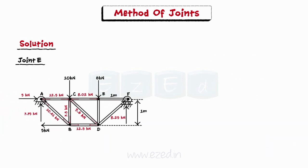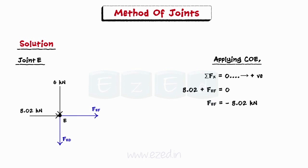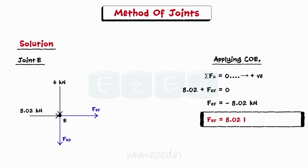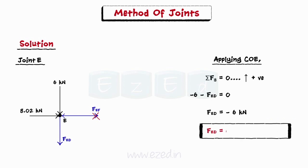Next, we isolate joint E as it has two unknown members EF and ED. We initially assume the members to be in tension and apply conditions of equilibrium to joint E. Equating the summation of all forces in the x direction to zero, the force in member EF is 8.02 kN, compressive in nature. Then, equating the summation of all forces in the y direction to zero, the force in member ED is 6 kN, compressive in nature.